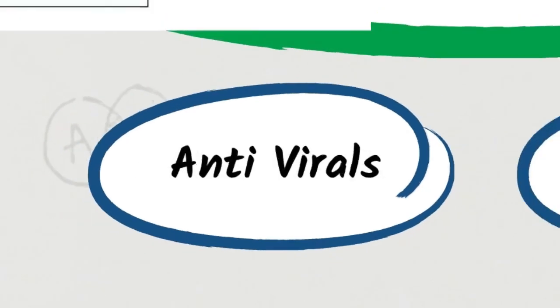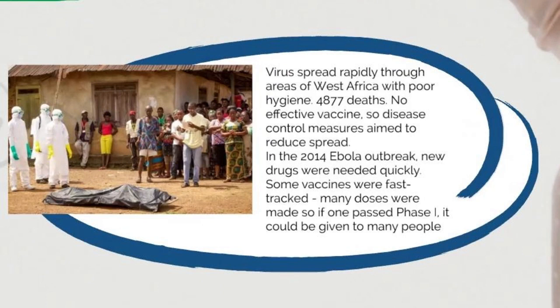Now we're going to talk about the Ebola outbreak. Relating to Ebola, you need to know how difficult it is to treat once infection has occurred, and because it's difficult to treat, the focus often shifts to prevention — something you'll be very familiar with now. You also need to know the ethical implications of using novel therapeutics during an outbreak. As background: Ebola spread rapidly through West Africa in 2014, with very poor hygiene in the area and almost 5,000 deaths, with no effective vaccine available.